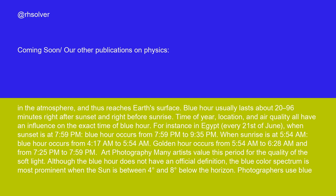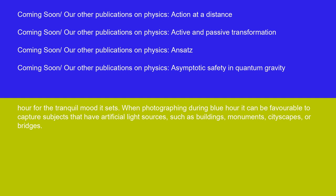Golden hour occurs from 5:54 a.m. to 6:28 a.m. and from 7:25 p.m. to 7:59 p.m. Many artists value the blue hour period for the quality of its soft light. Although the blue hour does not have an official definition, the blue color spectrum is most prominent when the sun is between 4 degrees and 8 degrees below the horizon. Photographers use blue hour for the tranquil mood it sets, and it is favorable to capture subjects with artificial light sources such as buildings, monuments, cityscapes, or bridges.